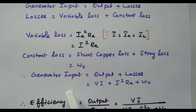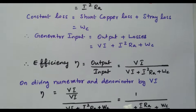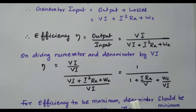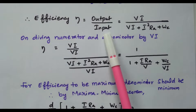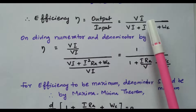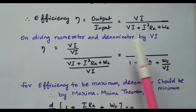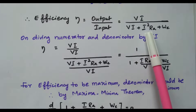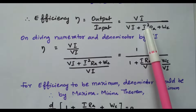We now have the expression for output as well as input. Output is VI; input is VI + I²RA + WC. From this, we can find the efficiency of the DC generator. Efficiency equals output divided by input: η = VI / (VI + I²RA + WC).